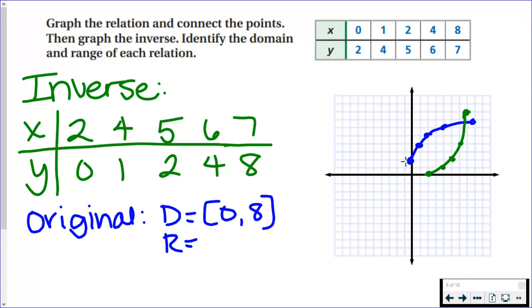The range is all of your y's. Starting down here with a y value of 2, that's the lowest y value. Working our way up, the highest y value would be 7. You can see that in the table. So because I connected them, it's all y values from 2 to 7.